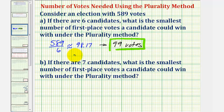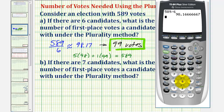To check this, notice that five times ninety-eight plus one times ninety-nine does equal five hundred eighty-nine. Five times ninety-eight plus ninety-nine is five hundred eighty-nine votes. Therefore, the candidate receiving ninety-nine votes would be the winner using the plurality method.